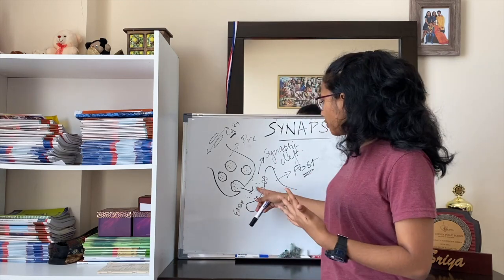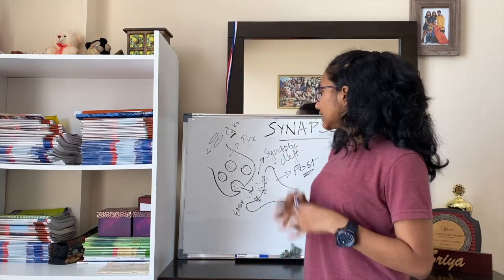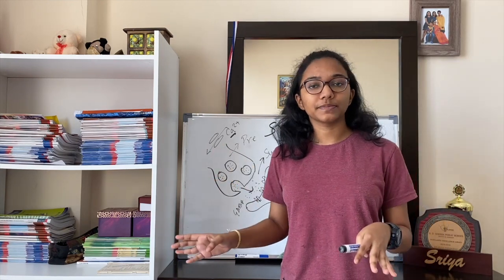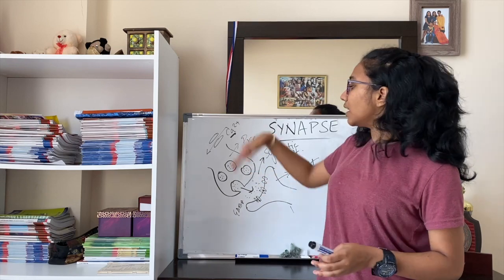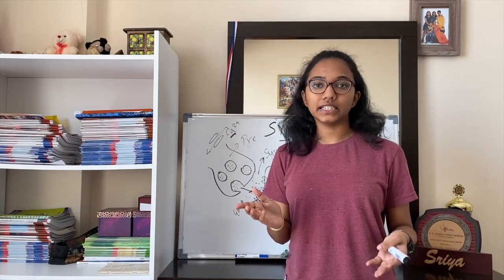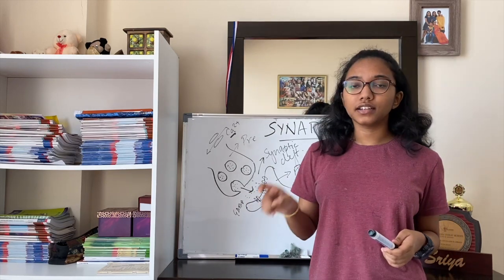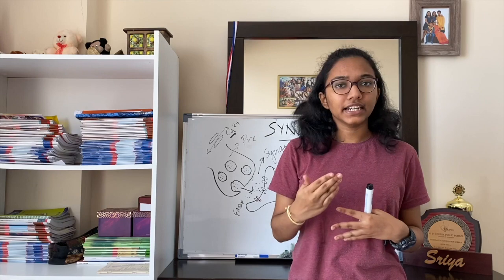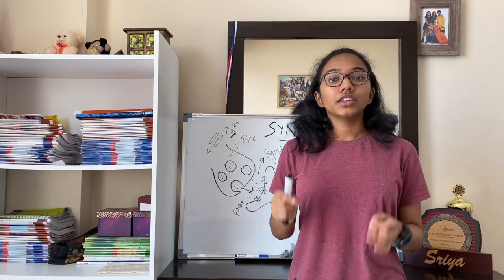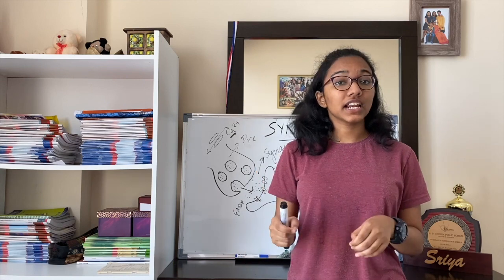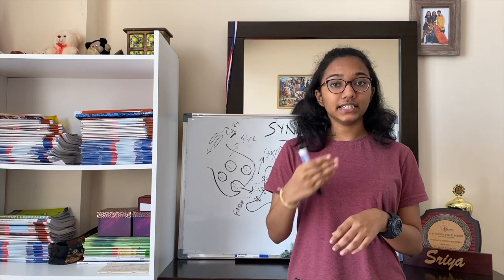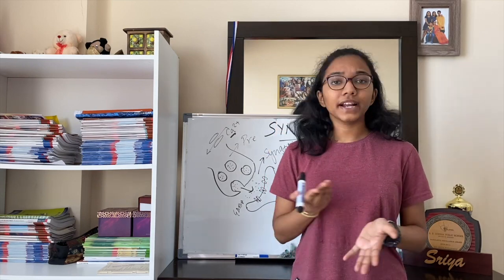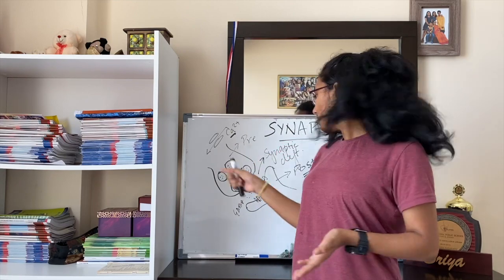You might ask — the neurotransmitters are now in the synaptic cleft; what happens to them? Three things can happen: one, they diffuse away; two, they are degraded by enzymes; three, the pre-synaptic neuron can reuptake the same neurotransmitters and recycle them. When degrading enzymes increase in number, neurotransmitters decrease because they are constantly being degraded — this causes diseases like Alzheimer's. The neurotransmitter responsible is acetylcholine; the enzyme that degrades acetylcholine increases, causing acetylcholine levels to drop, and this can be prevented by drugs that inhibit that enzyme.